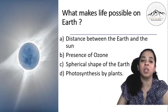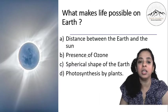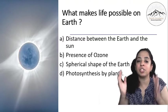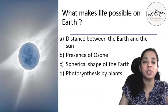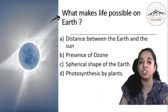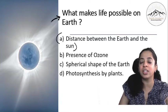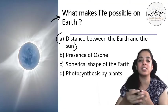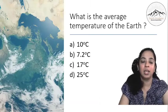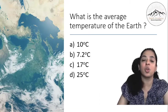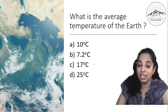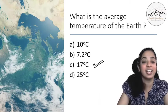What makes life possible on earth? Is it the distance between earth and sun, presence of ozone, spherical shape of the earth, or photosynthesis by plants? In these types of questions, all four options may be correct, but which option is most related to this question? Which is the most correct answer? Which is the most optimum? So distance between the earth and the sun. Such an optimum distance between earth and sun makes life possible on earth. Next, what is the average temperature of the earth? Is it 10 degree, 7.2 degree, 17 degree or 25 degree? So it is 17 degree Celsius or 17 degree centigrade.